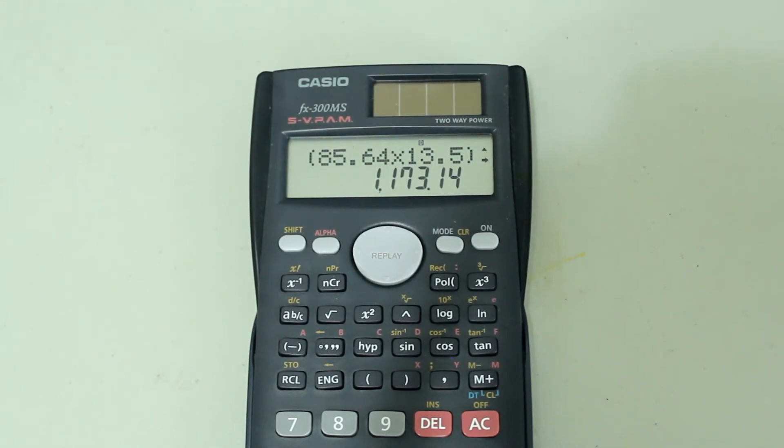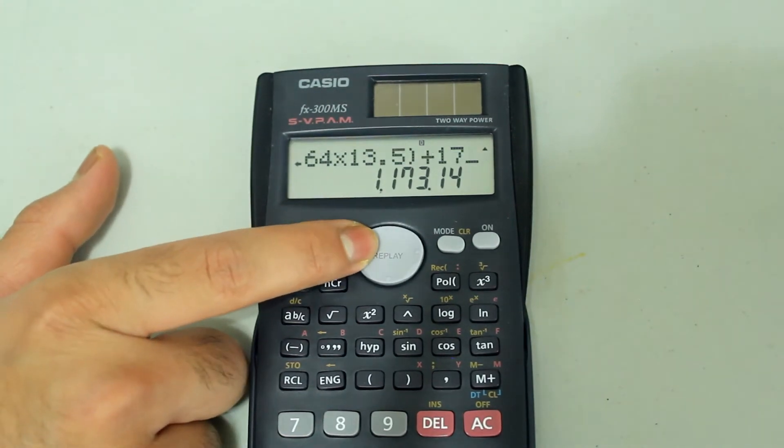Furthermore, let's say that you wish to make the 17 a 217. So you want to insert a 2 before the 1. What you would need to do, once again, is press the left arrow.